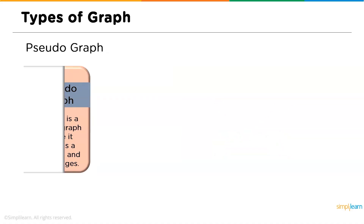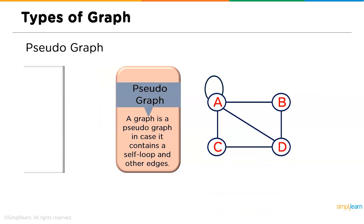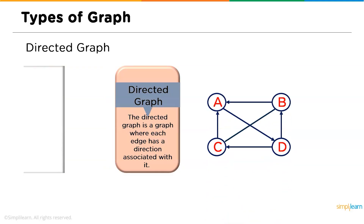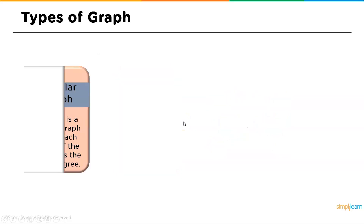Followed by complete graph we have the pseudo graph: a pseudo graph is one where at least one vertex has a self-looping edge — that is, an edge that connects to itself. Any graph that has this kind of edge is called a pseudo graph. Next we have the directed graph: any graph is called a directed graph where each edge has a direction associated with it. For example, an edge from B to A means traversal goes from B to A, not from A to B.